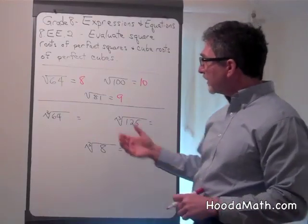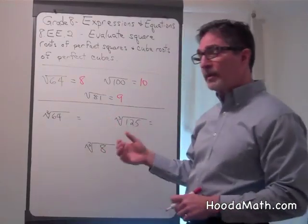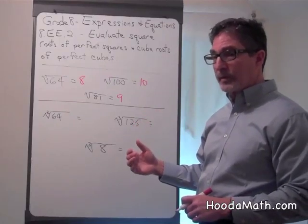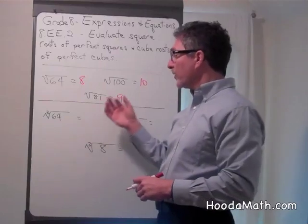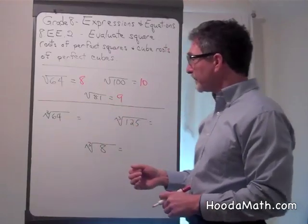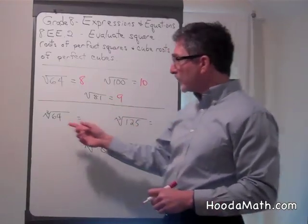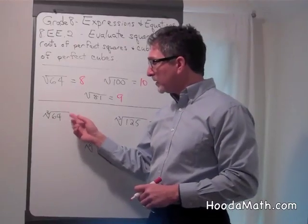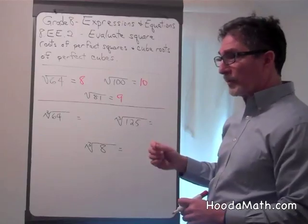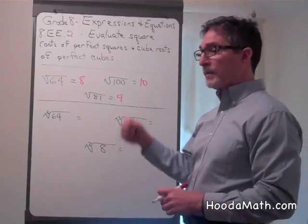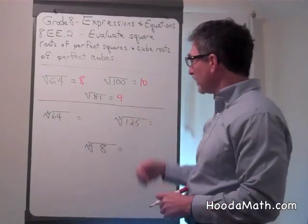Now to get the cube root of a number, we're looking for a number that is multiplied by itself three times in order to get the number under the cube root sign. Or a number times itself, times itself again, which will give you these numbers.